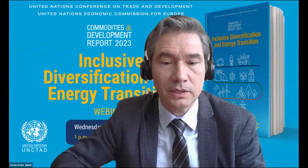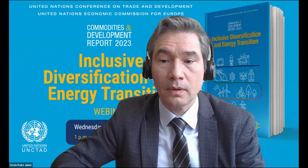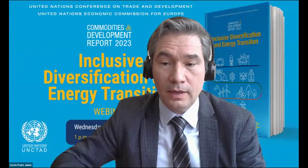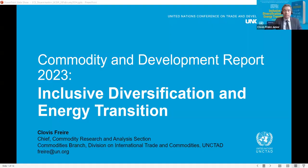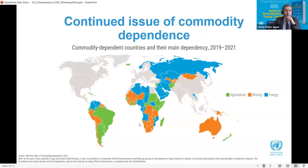Thank you, Taro. UNCTAD is celebrating its 60th anniversary this year in 2024 — 60 years of work on research, commodities, and development, on trade and development. But the sad reality is that dependence on export of commodities is as widespread in the developing world today as it was 60 years ago. Out of 195 UNCTAD member countries, 95 are commodity-dependent developing countries — two-thirds of developing economies — meaning they rely on primary goods for 60% or more of their exports. This includes 66% of small island developing states, 83% of least-developed countries, and 85% of landlocked developing countries.